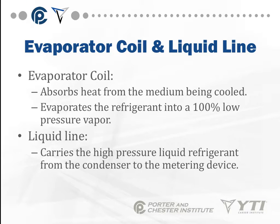The evaporator coil is next in the sequence. It absorbs heat from whatever I'm trying to cool — could be air, liquid, or slurpees at your 7-Eleven. It absorbs heat from the medium being cooled and uses that heat to cause the refrigerant to boil or evaporate into a 100% low-pressure vapor. The heat being absorbed drives that change of state, changing the refrigerant from a liquid to a vapor. The liquid line carries the high-pressure liquid refrigerant from the condenser to the metering device.